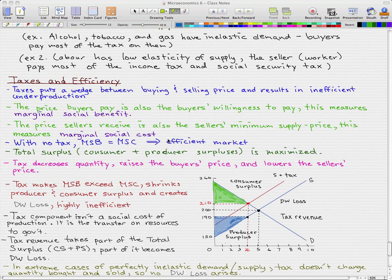We left off on taxes and efficiency, and that's where we'll pick up. We know that taxes drive a wedge between the buying and selling price, and that results in an inefficient underproduction.